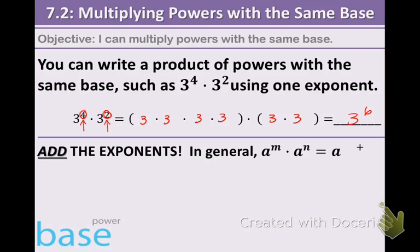So the basic idea here is that we're going to add the exponents. In general, a to the m times a to the n is a to the m plus n. So basic idea is we're going to add the exponents.